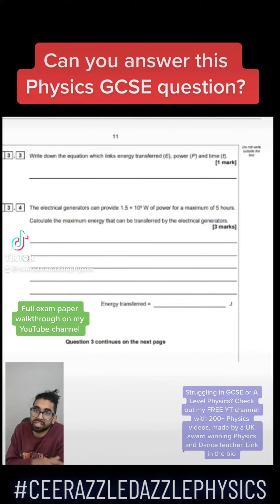Hey everyone, can you answer this physics GCSE question? Write down the equation which links energy transferred, power and time.